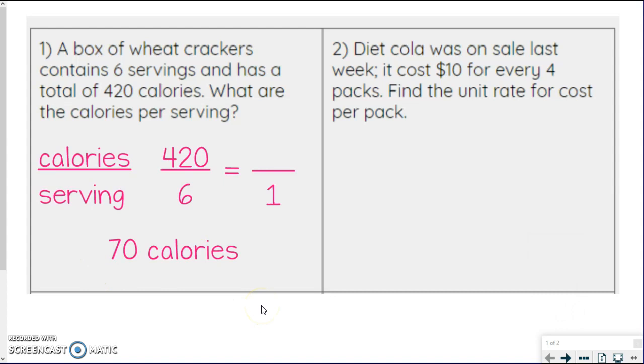Okay, let's go ahead and try question number two here. So Diet Cola was on sale last week. It costs $10 for every four packs. Find the unit rate for cost per pack. So it's telling us to find the unit rate. We know that means the second quantity has to be one. And we know the second quantity is packs because of the way they wrote it. Cost per pack. Packs coming second. They wrote it singularly.